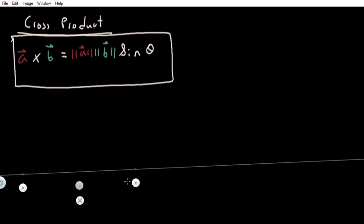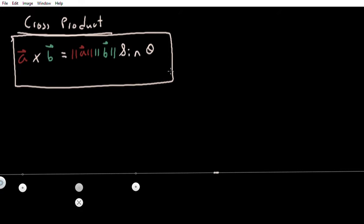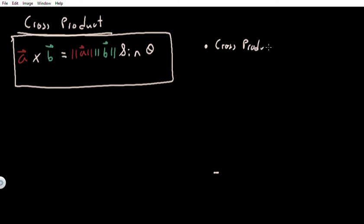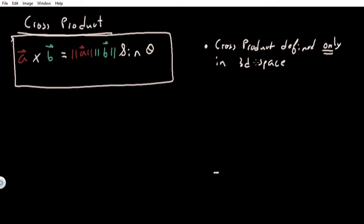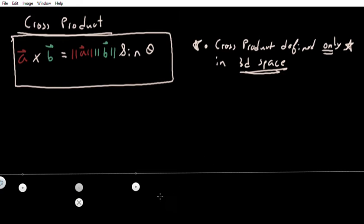To do this I'm going to have to draw out a three-dimensional grid. One thing we should keep in mind: the cross product is only defined in 3D space. You can't take a cross product in the plane — you have to take it in 3D space. So keep this in mind please.